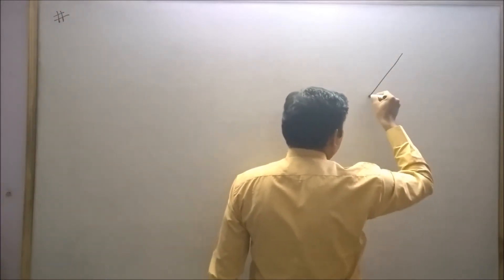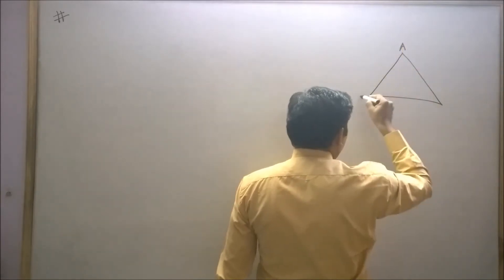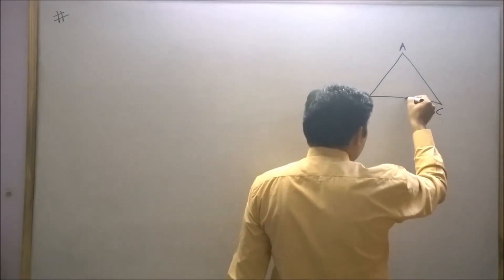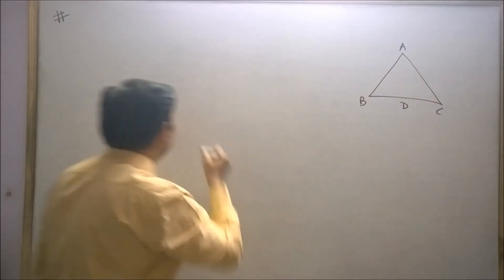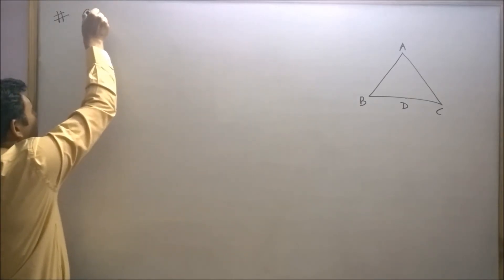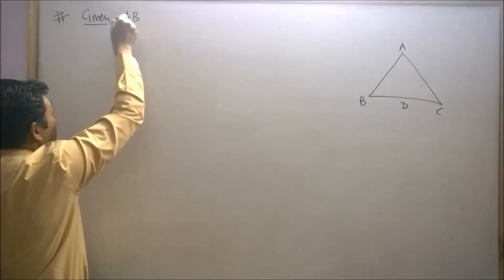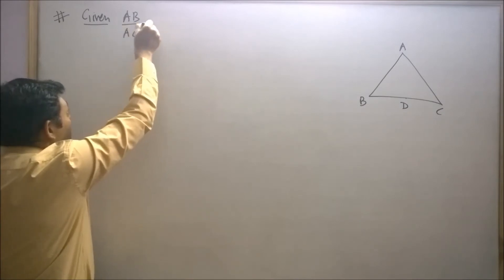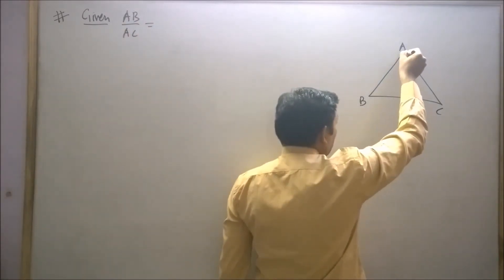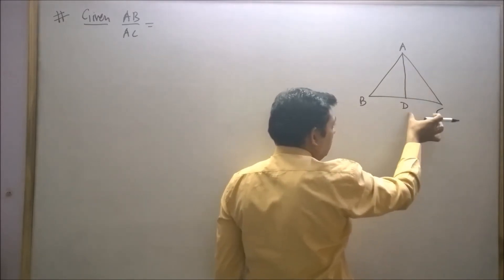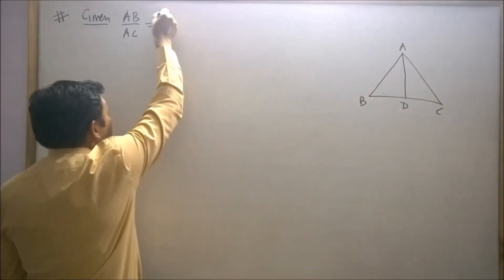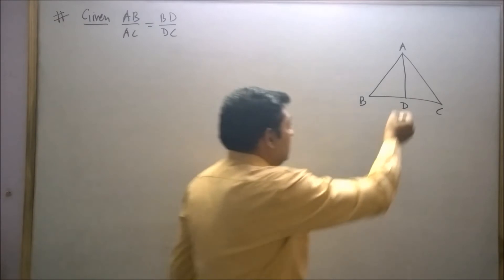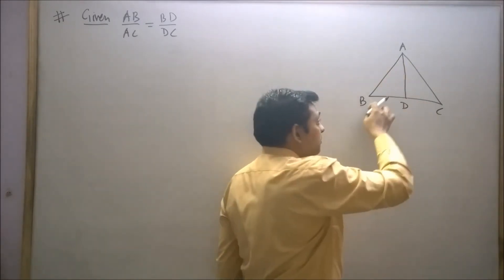It is given that ABC is a triangle and D is a point on BC such that AB upon AC is equal to BD upon DC. We need to prove that AD is the bisector of angle BAC.